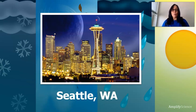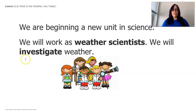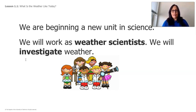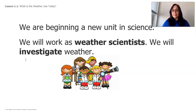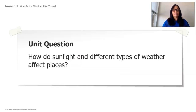I live in Seattle, Washington, with my husband George and my dog Coda. Today, we are beginning a new unit in science. We will work as weather scientists. We will investigate weather. When I investigate, I want to find out different things about a topic, and that is what we're going to be doing today. Our topic is going to be weather. Our unique question, our phenomenon, is: how do sunlight and different types of weather affect places?